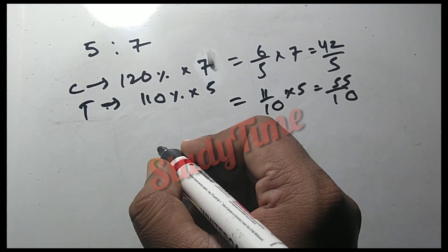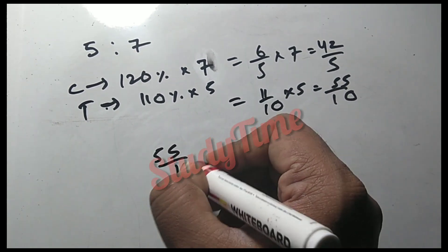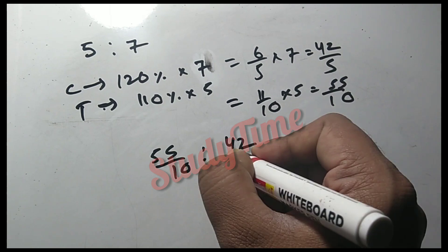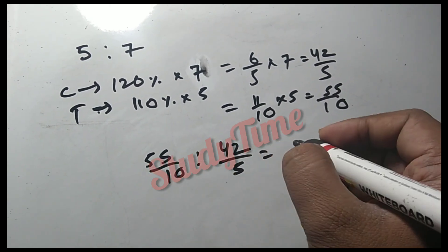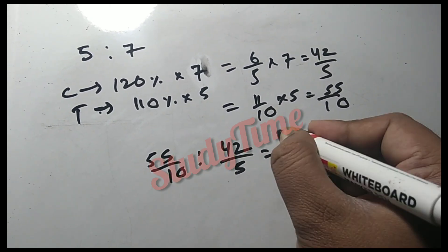The new ratio is 84 to 77, which simplifies to 60 to 77.